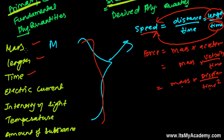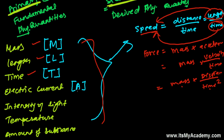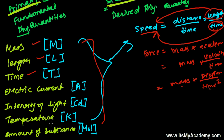These fundamental quantities are represented with capital letters inside square brackets. Mass is represented as [M], length as [L], time as [T], electric current in ampere as [A], intensity of light in candela as [cd], temperature in kelvin as [K], and amount of substance as [mol].